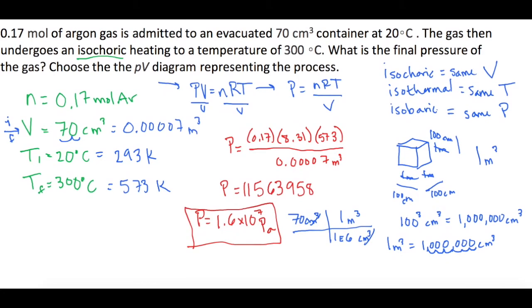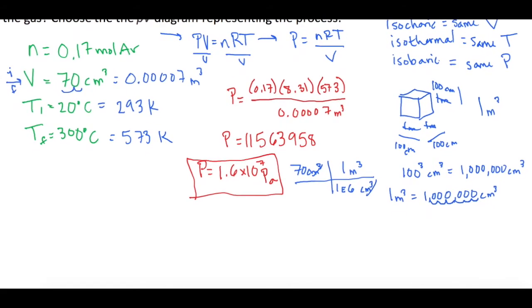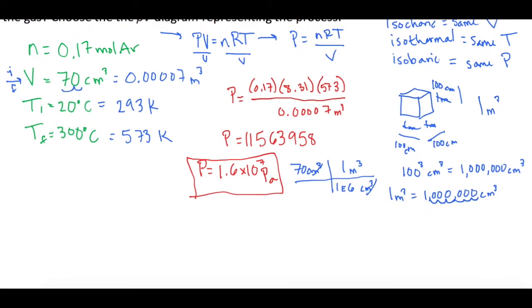Okay, so now the last part of the question, they say choose the PV diagram that represents the process. So we want some sort of a pressure versus volume diagram. We said the volume doesn't change. So whatever it is, it's going to be a vertical line. Meaning that our volume here, 0.00007 hasn't changed at all. And then our initial temperature is lower than our final temperature. So we'll have our initial here going up to our final. So this is the diagram.